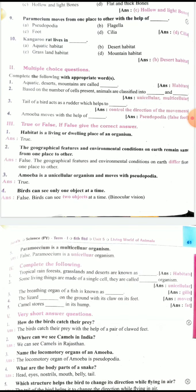True or false. If false, give the correct answer. First point: Habitat is the living or dwelling place of an organism. The answer is true. Second question: The geographical features and environmental conditions on earth remain same from one place to other. No, the answer is false. Because the geographical features and environmental conditions on earth differ from one place to another. Third one: Amoeba is a unicellular organism. Yes, the answer is true.